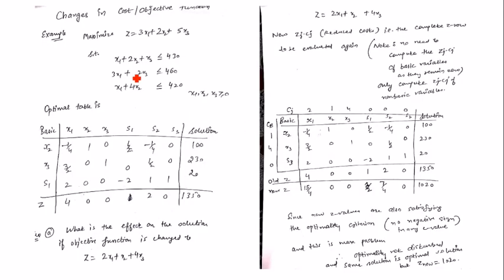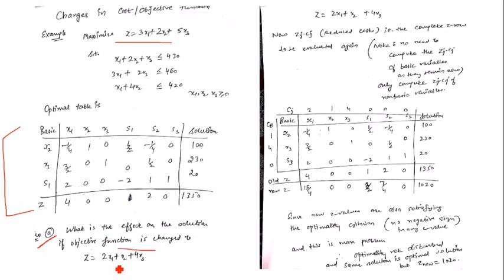For the example, I have taken a maximization problem with an objective function, three constraints, and an optimal table already given. In part (a), they ask: what is the effect on the solution if the objective function is changed? The original z was 3x1 + 2x2 + 5x3, and the new one is 2x1 + x2 + 4x3.